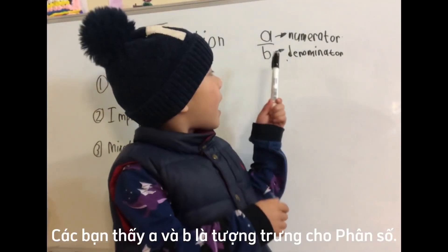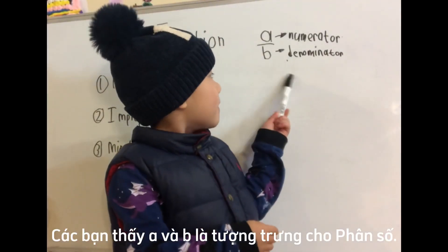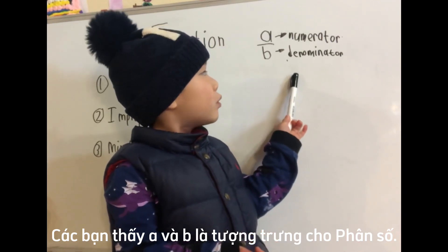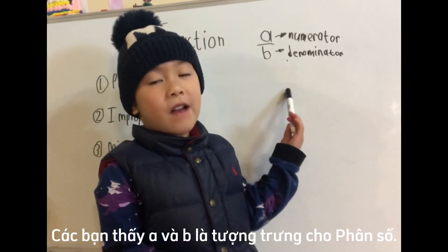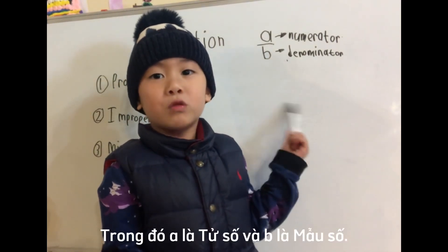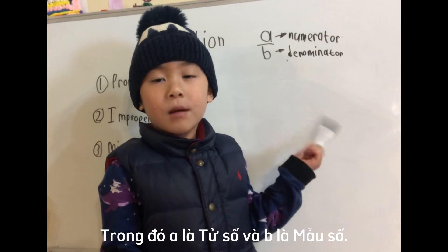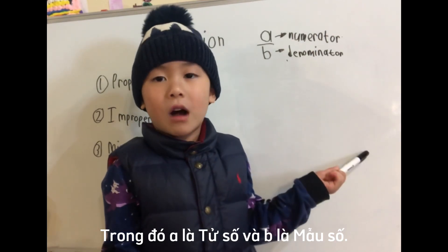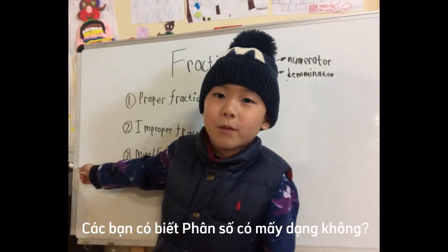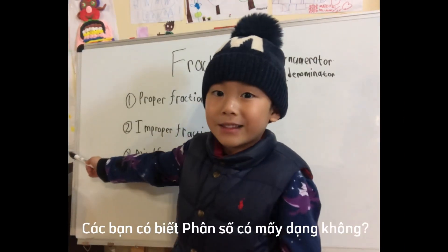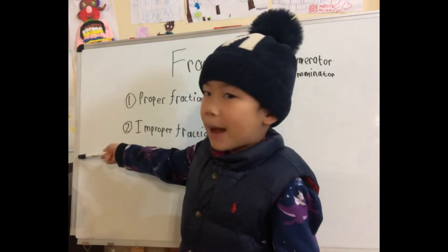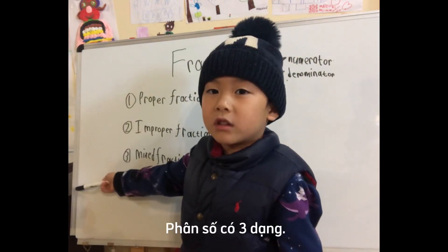A and B are pretending to be fractions. A is the numerator. B is the denominator. Did you know how many types of fractions there are? It's 3 types of fractions.